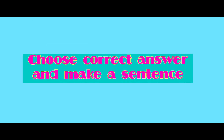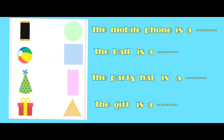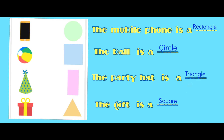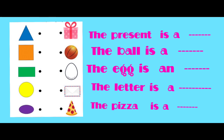Choose the correct answer and make a sentence. Here are the pictures of shapes and objects. Now let's make a sentence. I will give you time. Write down in your notebooks and then check the answers.